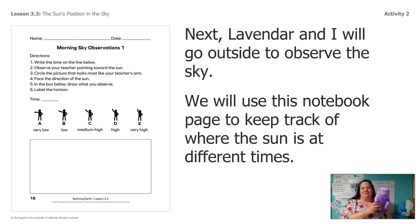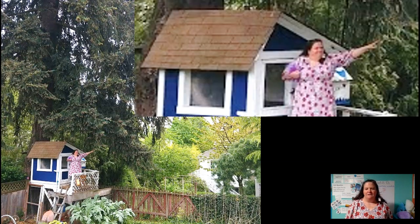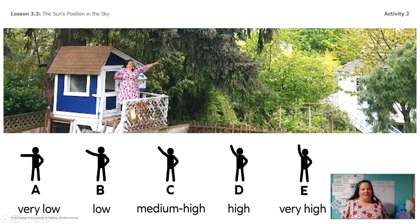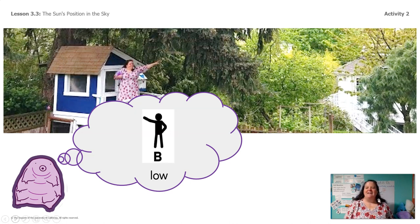This time, Lavender and I actually will go outside and look at where the sun is at different times, and I took some pictures. So let's look at that. We're gonna make some observations outside and use this page to keep track of what we observed. This is a picture of Lavender and I outside in the morning. Can you see where I'm pointing? Look at where I'm pointing. Would you say I was pointing to very low, low, medium high, high, or very high? Lavender has an idea — Lavender says low.